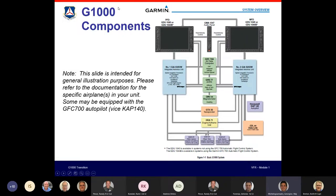One difference with our CAP planes: a standard G1000 setup has only one audio panel, but our CAP planes have two — one for the left seat and one for essentially everyone else. This allows the mission observer to talk on COM3 while the pilot talks on COM2, entirely independently. It's a really handy feature.